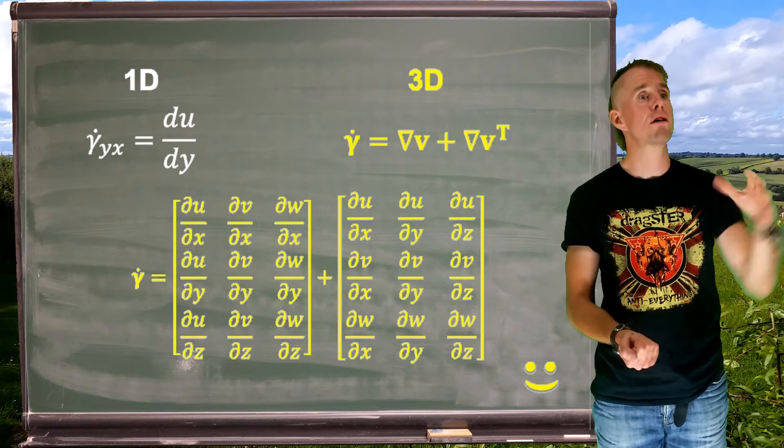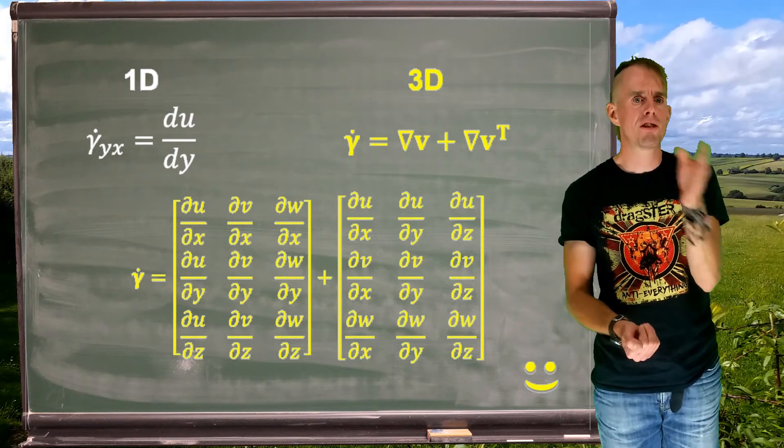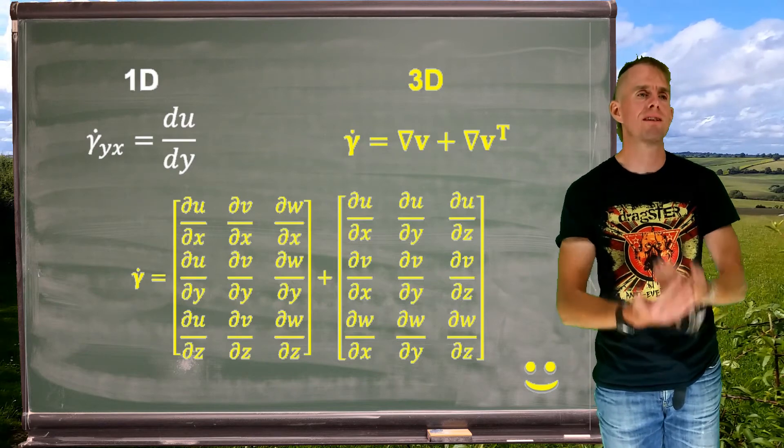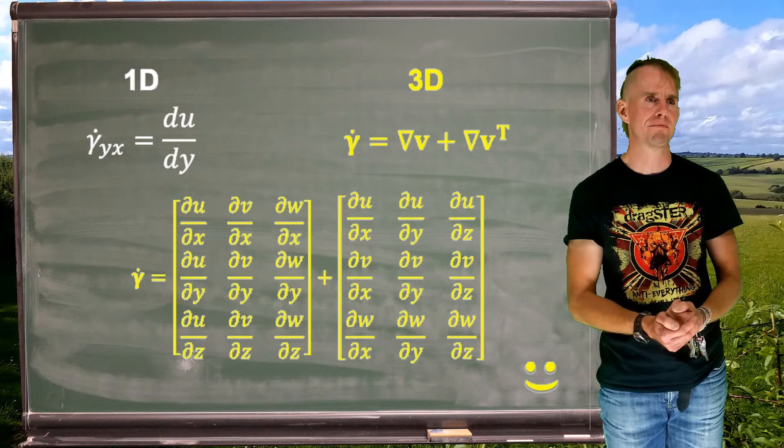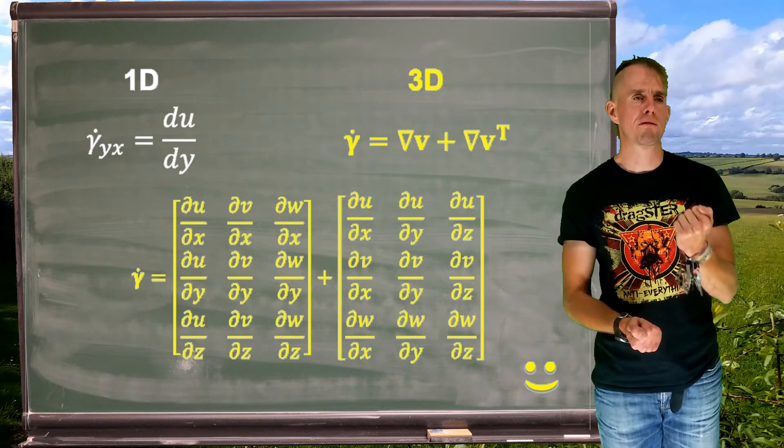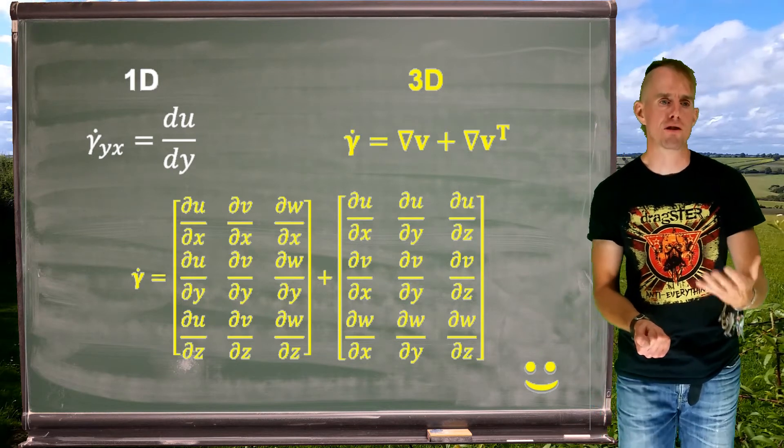And if you look at each element position within that tensor, we can see that the result of summing those two together is symmetric. So gamma dot equals grad v plus grad v transpose. It's equal to the sum of those two terms because it maintains symmetry.